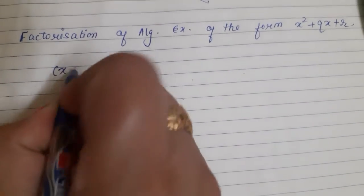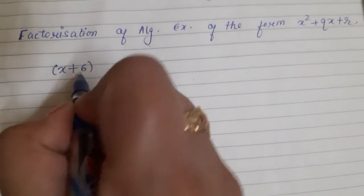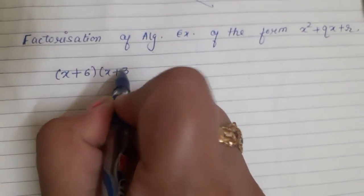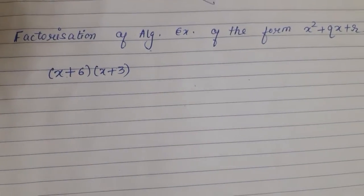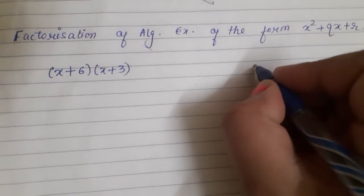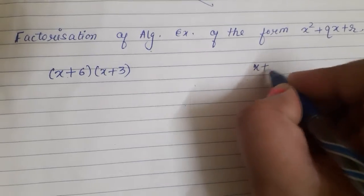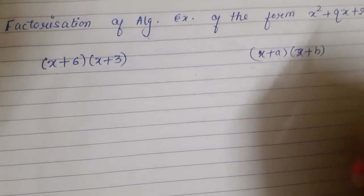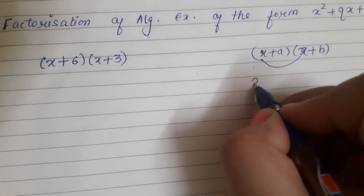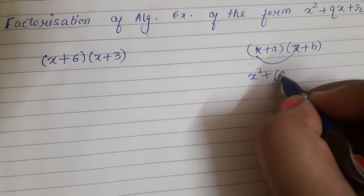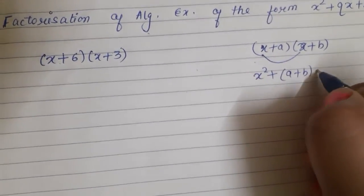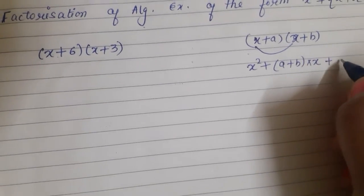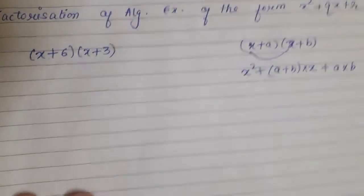Before that, I want to recall the expression in which we were supposed to find out the product. Which identity have we used here? We use the identity x plus a into x plus b. And how we use the identity? Basically, square of the variable, sum of the constants multiplied by the variable, and at last the product of the constants.